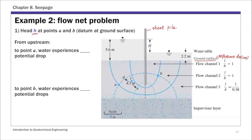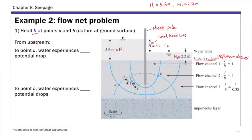To calculate the total head at A, let's first identify a few things from the given flow net. The total head when water enters the soil at upstream, we call h1, is 5.6 meters. Since we put the reference datum at the ground surface, the total head is basically the height of the water table above ground surface. The downstream water table h2 is 2.2 meters — that's the total head when water exits the soil layer.